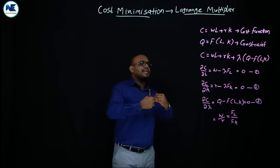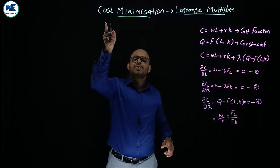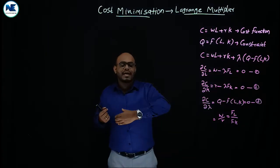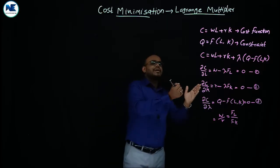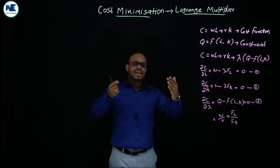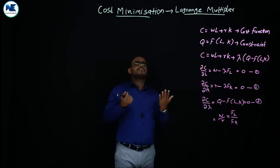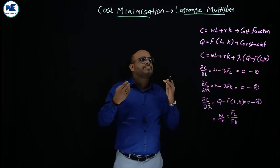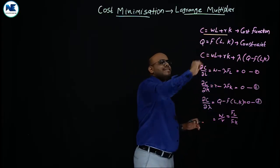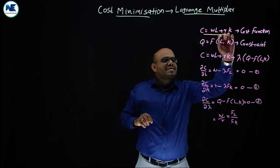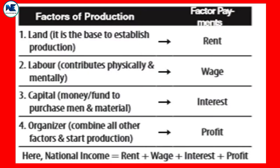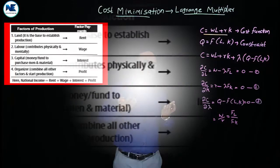We are discussing constrained optimization with the Lagrange multiplier — that is, a multivariable function. In a perfectly competitive market, a firm's cost function can be written as: C = WL + RK. Here W is the wage rate, L is labor, R is the rate of interest — the reward for capital — and K is capital, one of the factors of production.